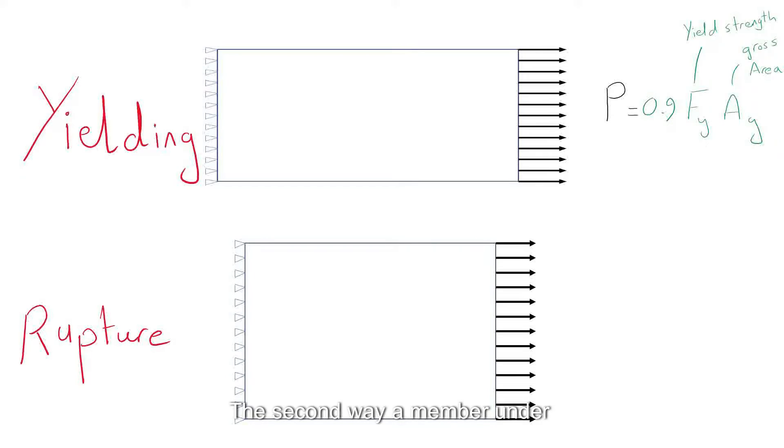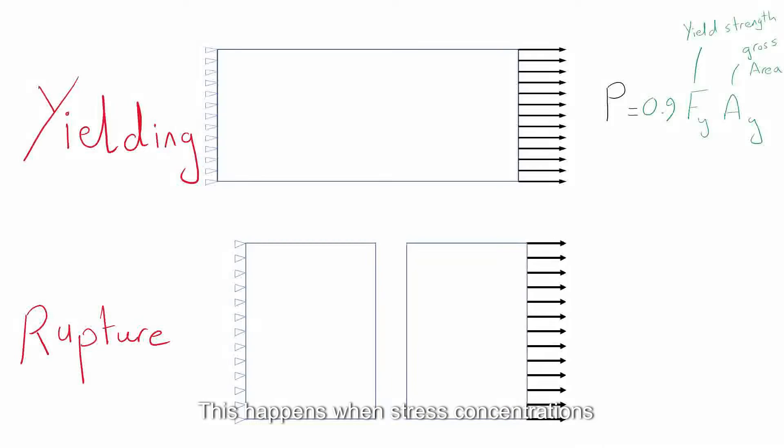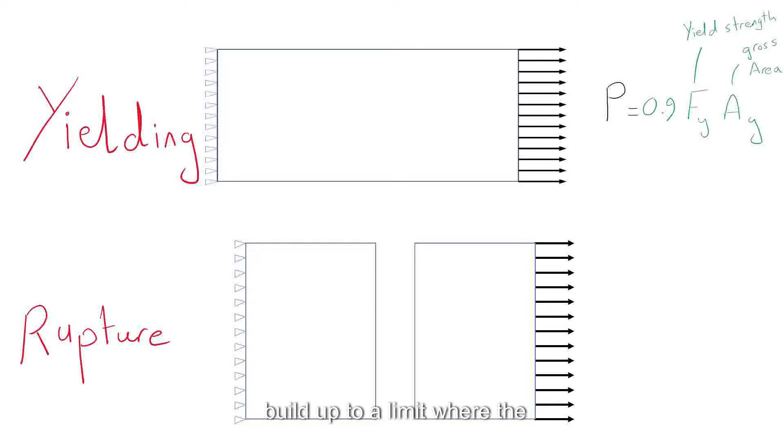The second way a member under tension can fail is rupture. This happens when stress concentrations build up to a limit where the material fractures before it yields globally. The load required for a member to fail under rupture is calculated by multiplying the effective cross-sectional area of the member by the ultimate strength of the material.